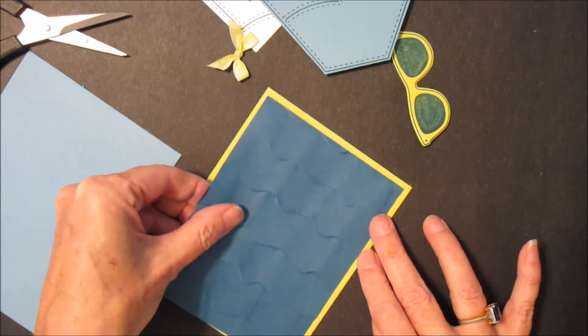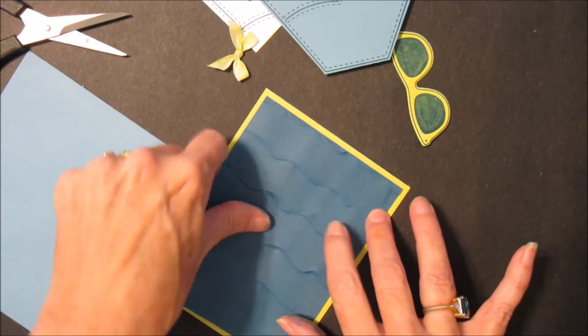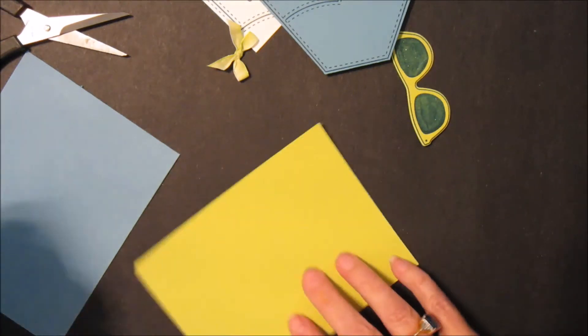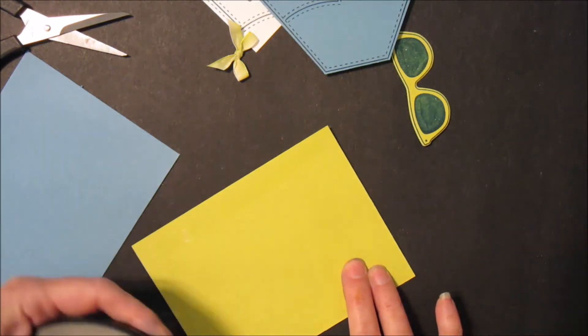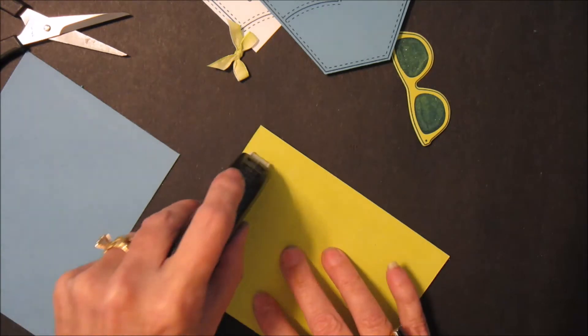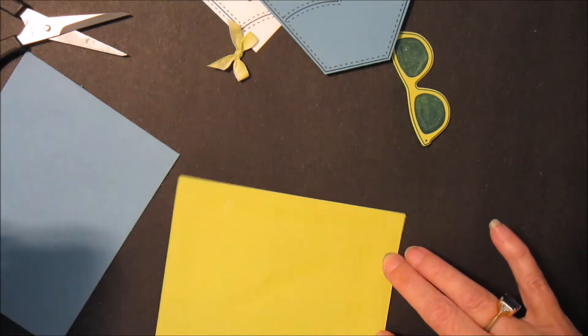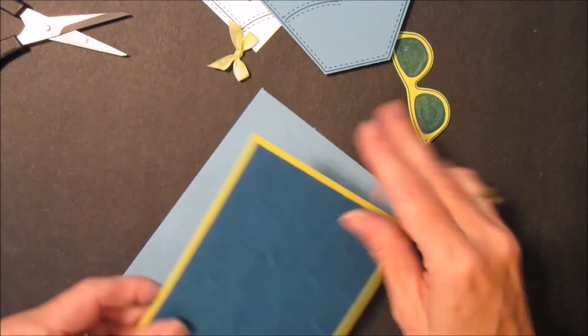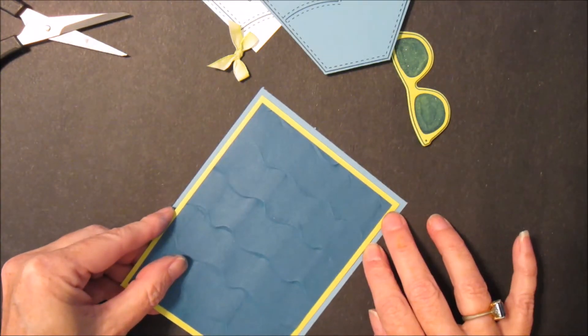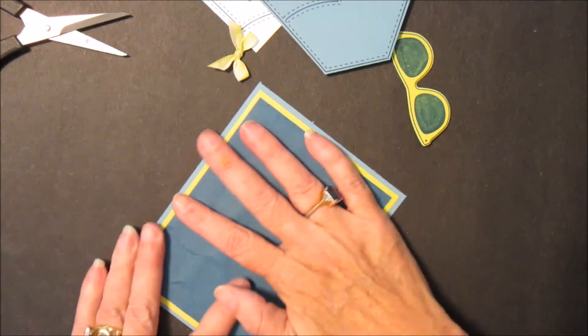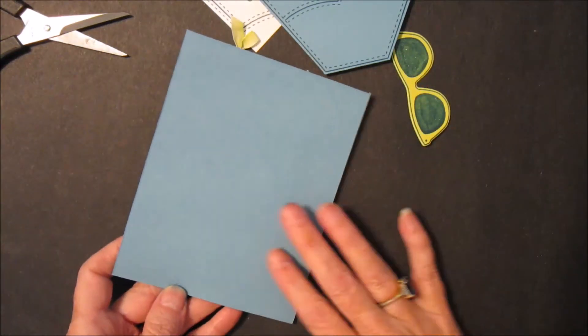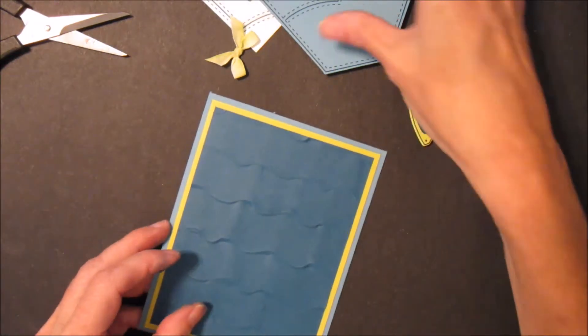So we'll go on here, and then onto the backing. Now if you want to write a really nice note to the graduate and have some advice for them or something, just take and put a piece of Whisper White on the back side here, and then you can do your message that way.